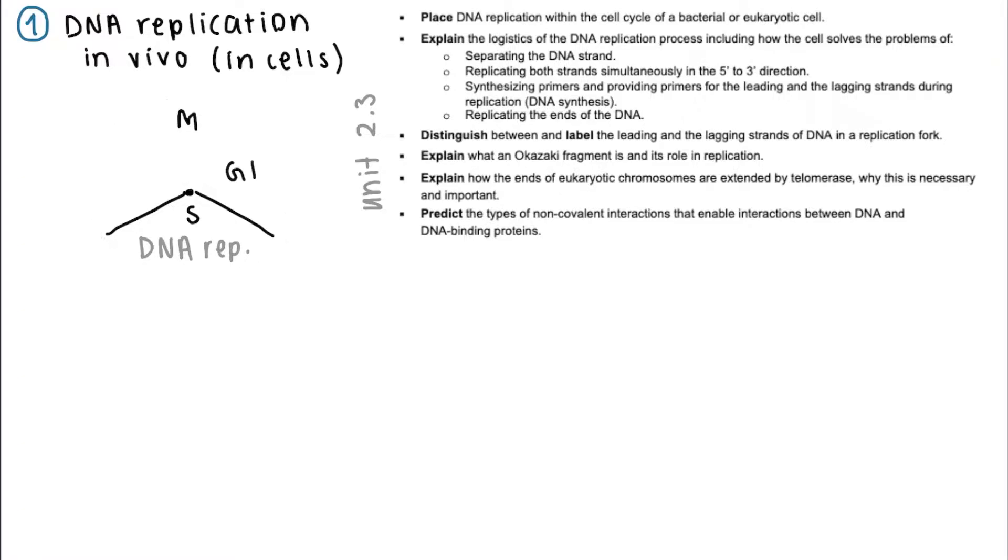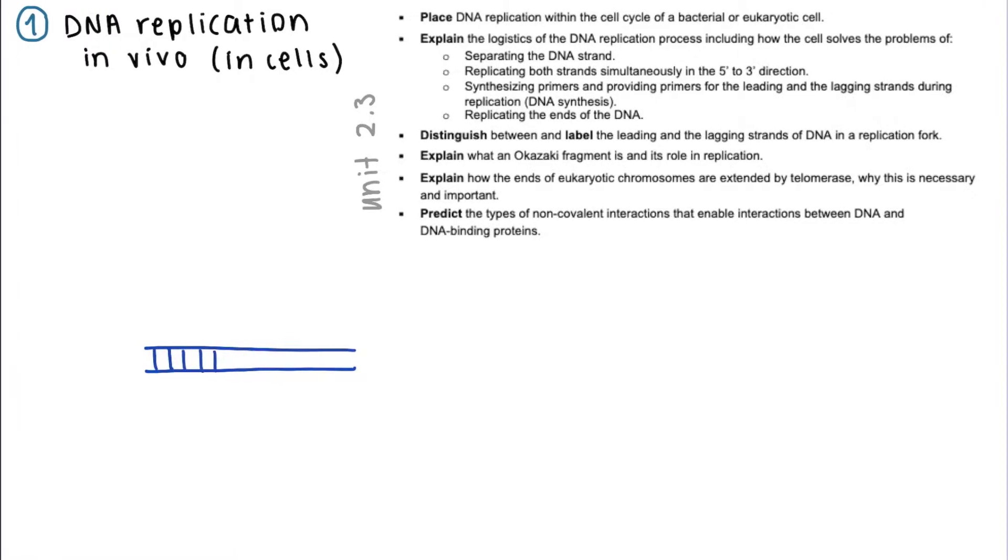This happens so that one DNA molecule can stay with the parent cell, and one DNA molecule can go to the daughter cell produced by mitosis. The first task that the cell has to complete is unwinding the double helix, and it does so with the help of the enzyme helicase.